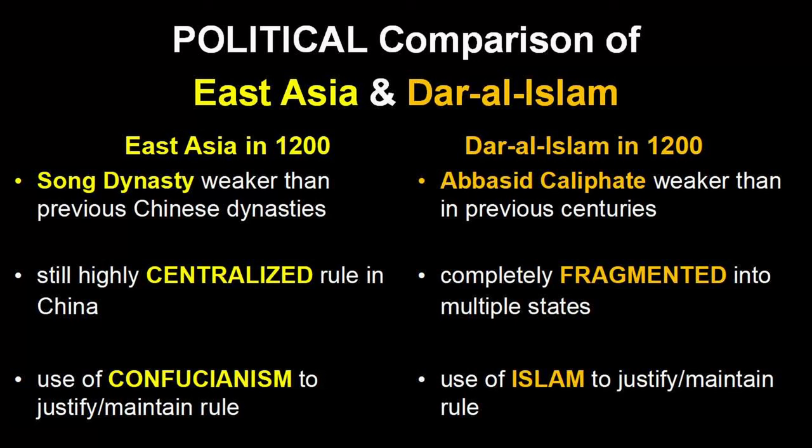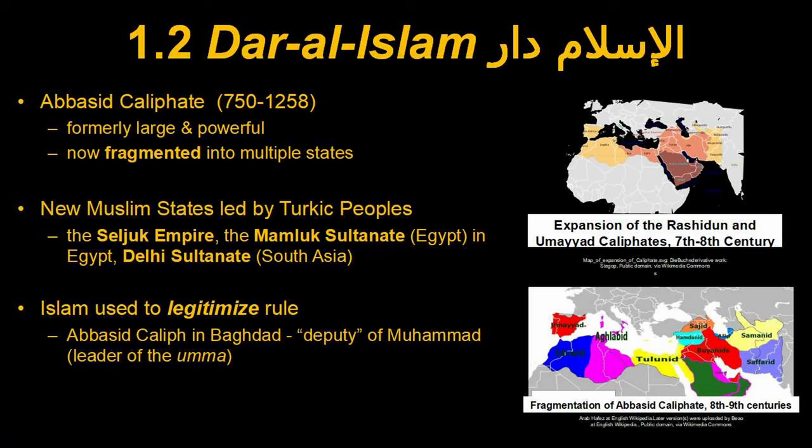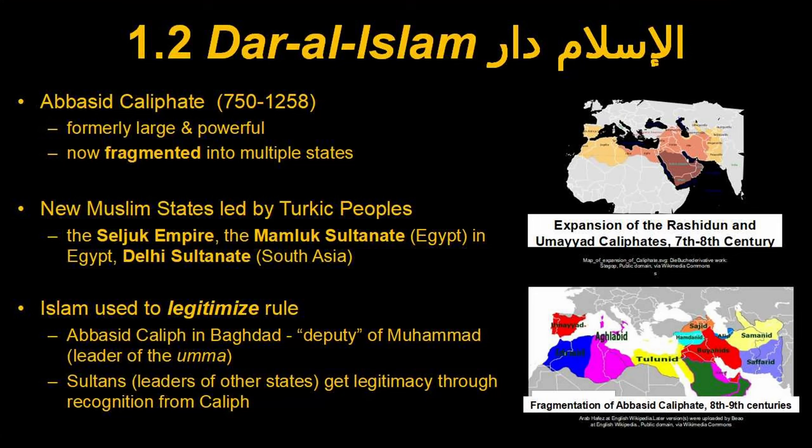Another comparison we could make with China is the use of belief systems to justify and legitimize rule. While Chinese emperors use Confucianism, the leaders of states in Dar al-Islam use Islam to justify their rule. For the Abbasid Caliphs, as deputies of the Prophet Muhammad, they had clear religious legitimacy as leaders of the Ummah, the Muslim community. The sultans got their spiritual legitimacy more indirectly, often by getting official approval from the Abbasid Caliph himself.